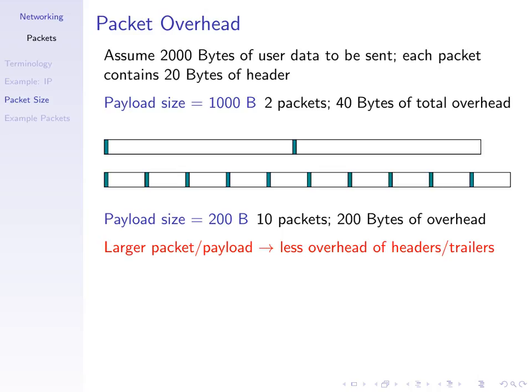With a smaller payload of 200 bytes, we'd need 10 different packets to make up the 2000 bytes of user data. With 10 packets each containing 20 bytes of header, we'd have 200 bytes of overhead total. So with a larger payload we have smaller overhead — we spend less time transmitting to deliver the same data. In general, having a larger payload with a fixed-size header gives less overhead from headers and trailers, meaning a smaller transmission time.